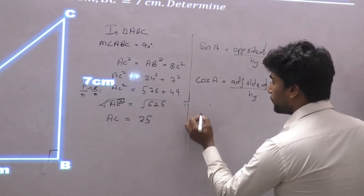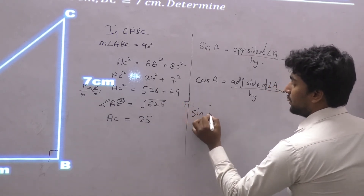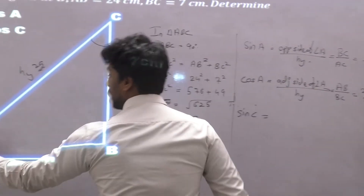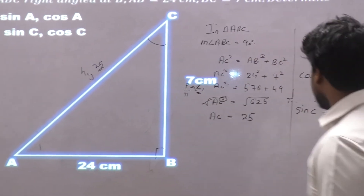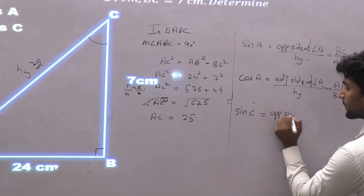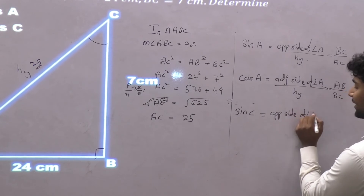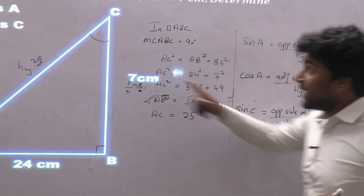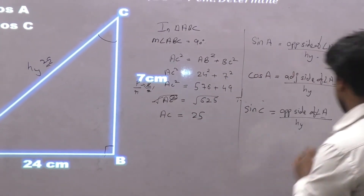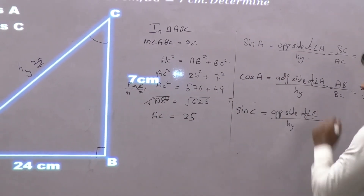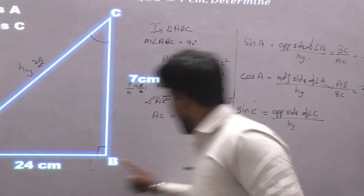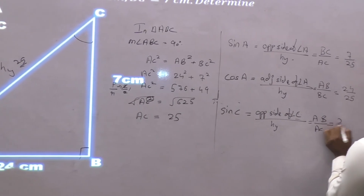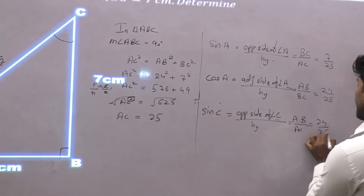Now let's talk about sin C. Sin C is the opposite side of angle C upon hypotenuse. The opposite side of angle C is AB. So sin C equals AB upon AC, that is 24 upon 25.